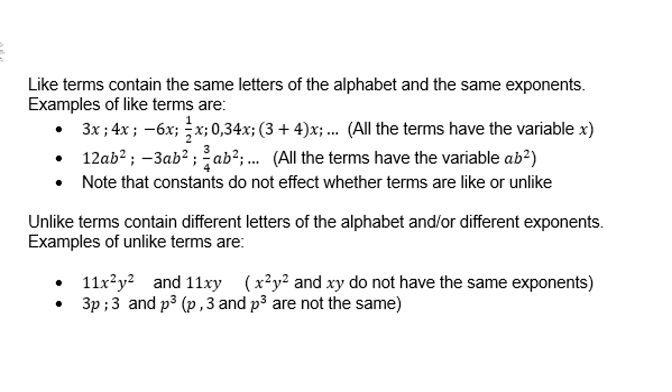So the constant values can be different, but the letters must be the same. 12ab², negative 3ab², three-quarter ab² all the terms have the variable ab². Note that constants do not affect whether terms are like or unlike.